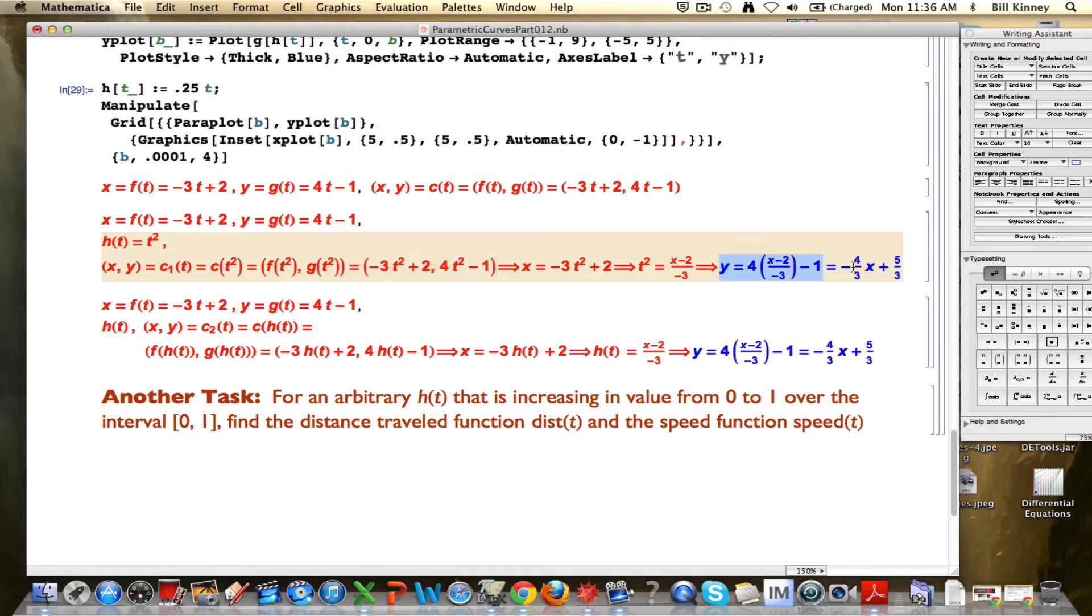However, it still is along the same straight line because the t squared can be eliminated. In general, if you have an h of t that can be anything, and you create a new parameterization where you plug h of t into c, and therefore into f and g, you also can eliminate the h of t to see that it parameterizes the same line. Starting at a different point, ending at a different point, different directions in speed, but it still is along the same line.